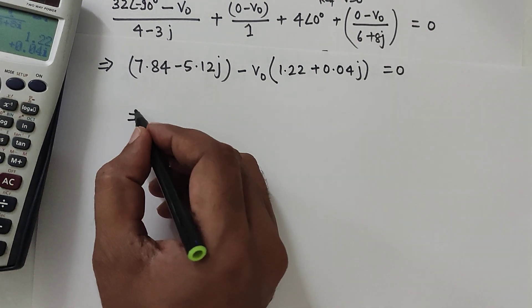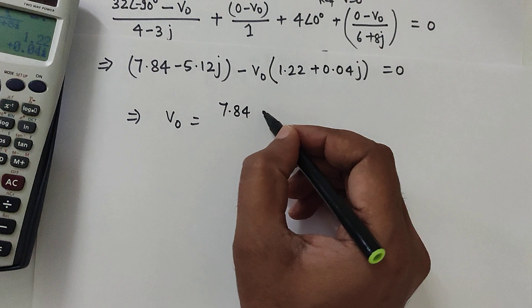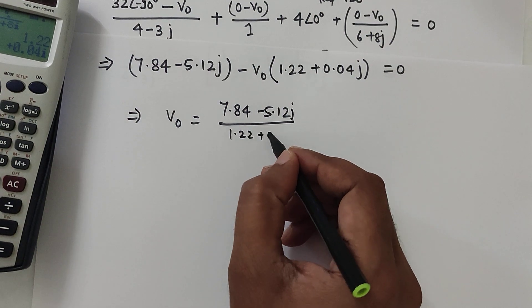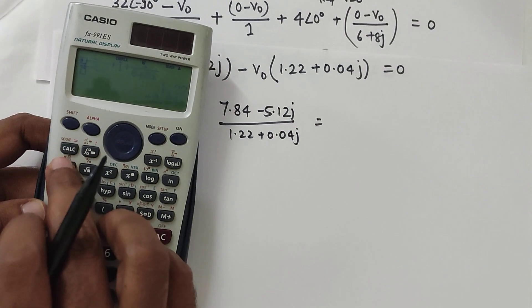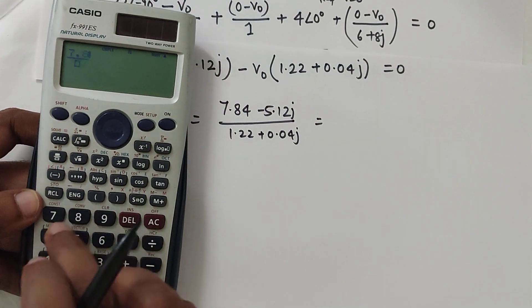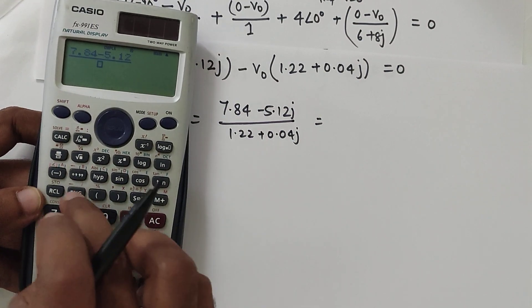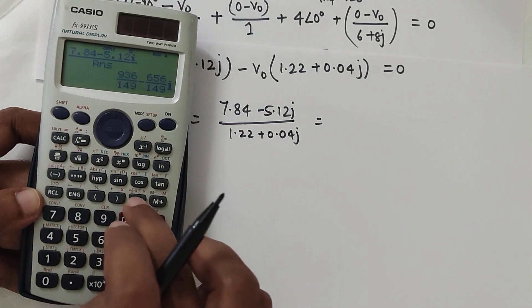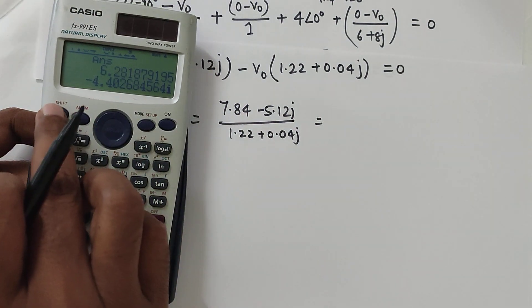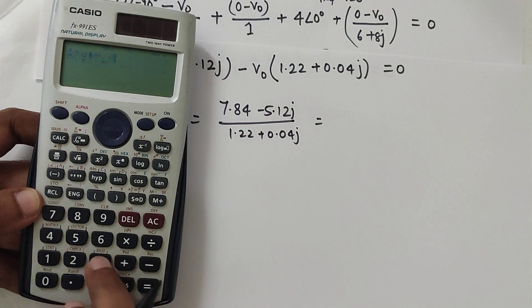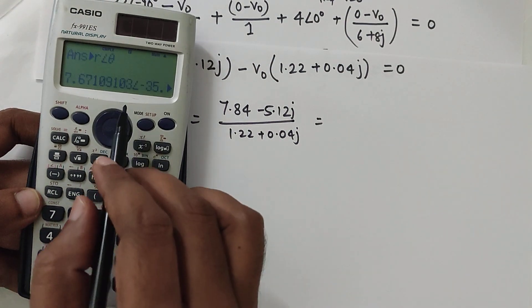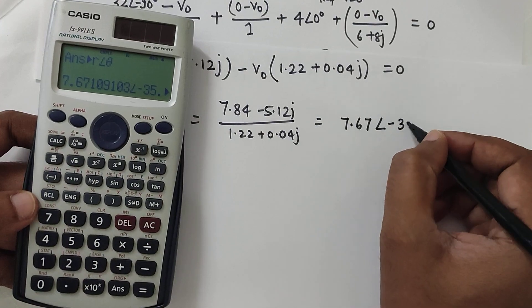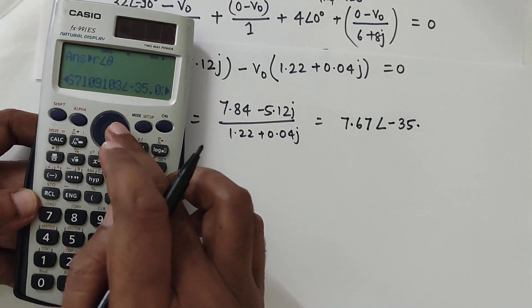So V0 is 7.84 minus 5.12j divided by 1.22 plus 0.04j. So you can calculate as 7.84 minus 5.12j divided by whatever answer we had. So this is equal to 6.28 minus 4.4j. Let us directly convert this into R angle theta. So the answer is 7.67 angle minus 35.02.